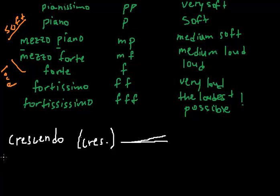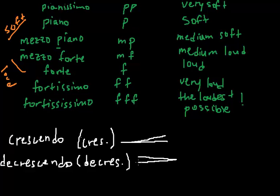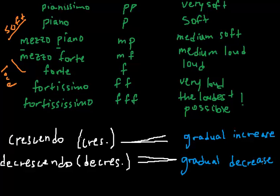This is a crescendo. Now, the opposite of that would be a decrescendo or decress. Or exactly the opposite. Right. Again, so this means a gradual increase. And this means a gradual decrease in volume of your music.